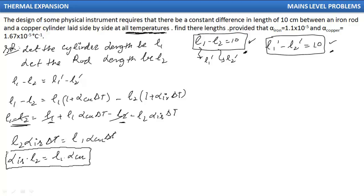So this relation I got as equation 1. If I give this as equation 1, and this as equation 2, then carefully see, we have 2 variables. We know alpha iron, we know alpha copper. These two things are already mentioned in the question. And we know one more fact that L1 minus L2 is 10. So we have 2 relations.